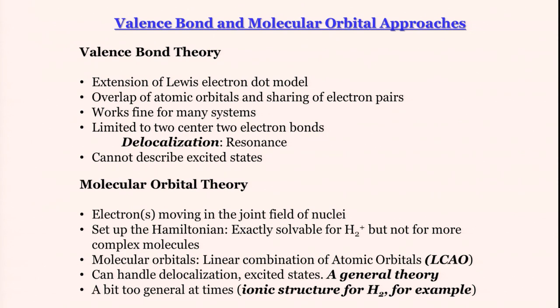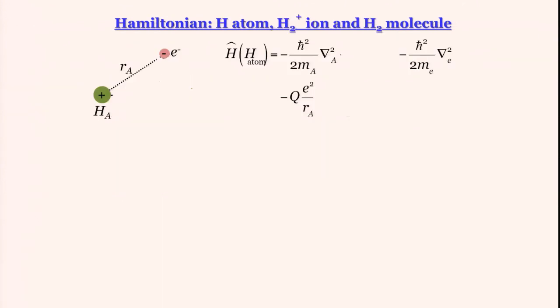A good point to start discussing anything to do with quantum mechanics is to try and formulate the Hamiltonian. So we will start from something we know already: hydrogen atom. Hydrogen atom as we know has one nucleus and one electron.